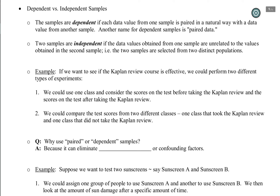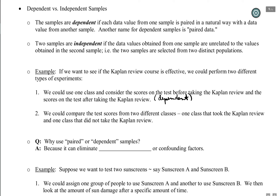Looking at the two examples: a Kaplan course is being considered — is it worth the student's time? We want to test effectively two populations: those who take the course and those who do not. In example one, one class takes the exam, then goes to the Kaplan review, then takes the exam again. This before-and-after, pre-and-post situation creates data that is paired on the same student — so this is a dependent samples approach.